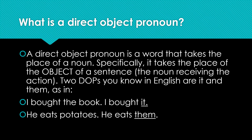He eats potatoes; in that sentence potatoes is the object, and he eats them means the same thing, but them replaces potatoes and it's the direct object pronoun. Really easy concept, very confusing name, but it means the book and them means potatoes.